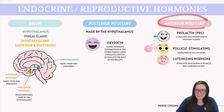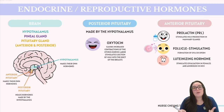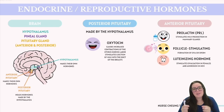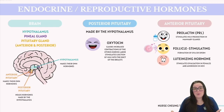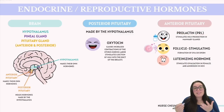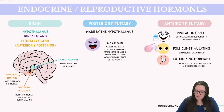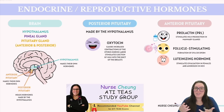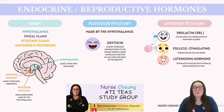The anterior pituitary gland, however, is a hormone powerhouse. It is capable of producing its own hormones while still being tightly regulated by the hypothalamus. Some of its key hormones related to the reproductive system include prolactin, which stimulates milk production in the mammary glands; follicle-stimulating hormone (FSH), which stimulates the formation of ova and sperm; and the luteinizing hormone (LH), which triggers ovulation and androgen production respectively.